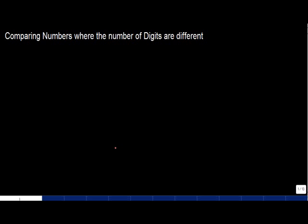We are comparing numbers where the number of digits are different. If I tell you there are various numbers and ask you to find out which is the greatest number or which is the smallest number, how do you find this out? What we are discussing now is how do you compare two numbers.